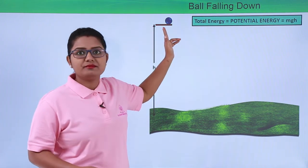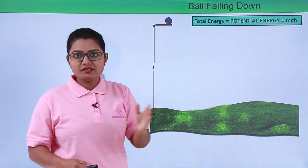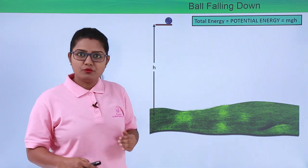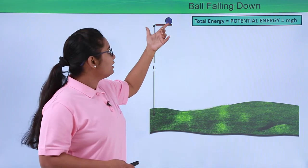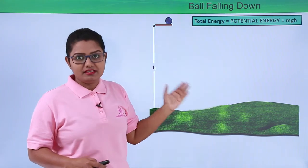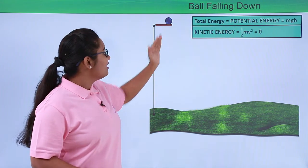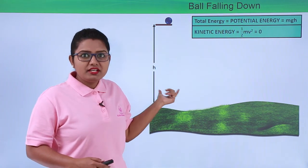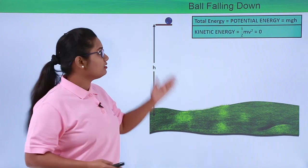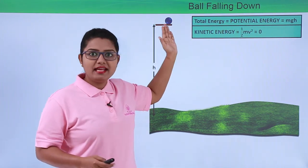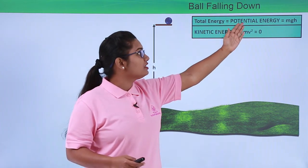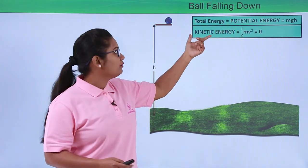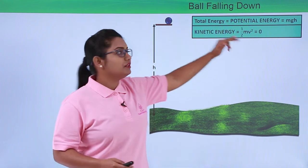When this ball is at this height, resting over there, it has only potential energy in the form of mechanical energy, but it has no kinetic energy at all, because it is not moving. Any body which is moving or has some velocity is said to possess kinetic energy, which depends upon its velocity. Since this body is not moving, it has no kinetic energy. Since it is at height H above the ground, it has gravitational potential energy, which we know equals MGH.